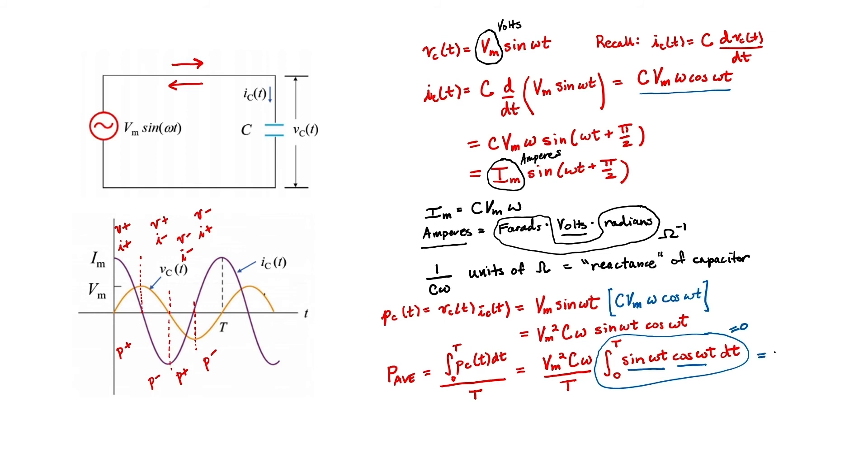The average power is just zero and it makes a lot of sense because a capacitor cannot burn up power. There's no resistor in it, it's just a capacitor. The only resistance that we might have is parasitic resistance that we've not modeled here.